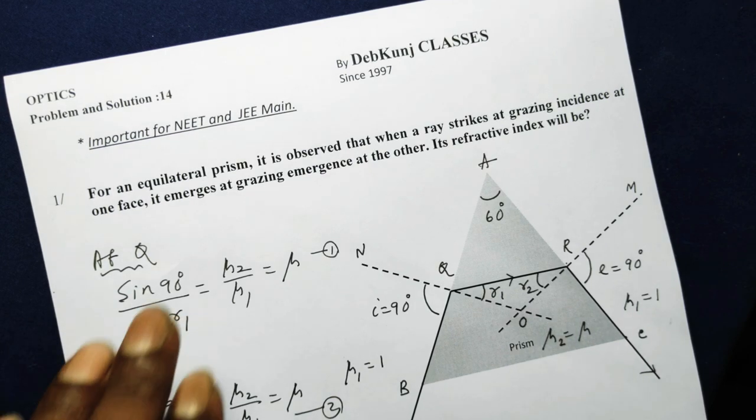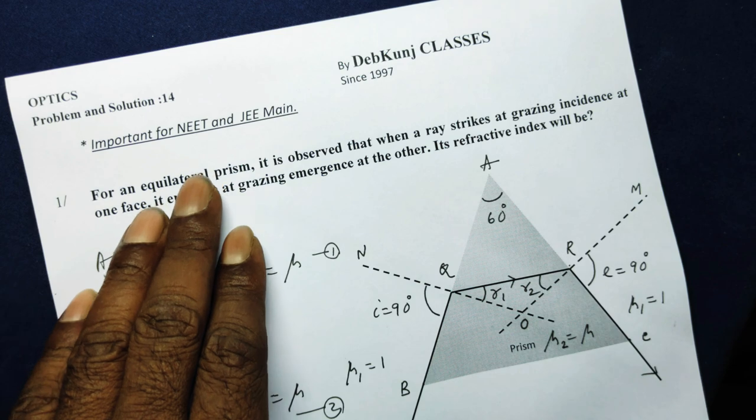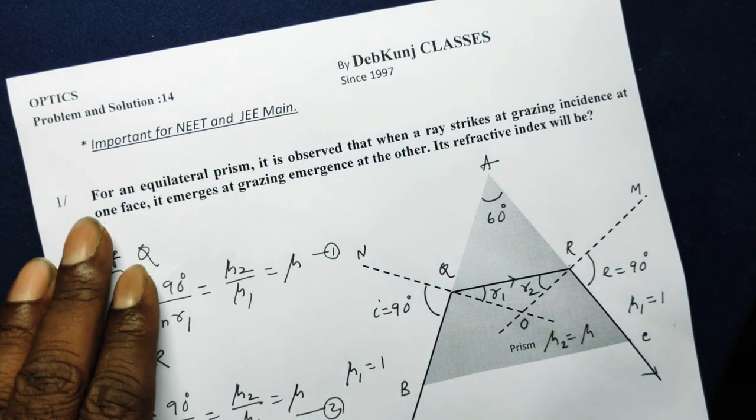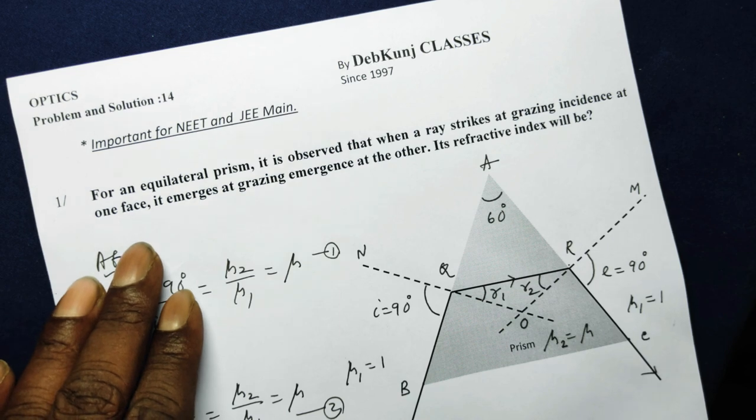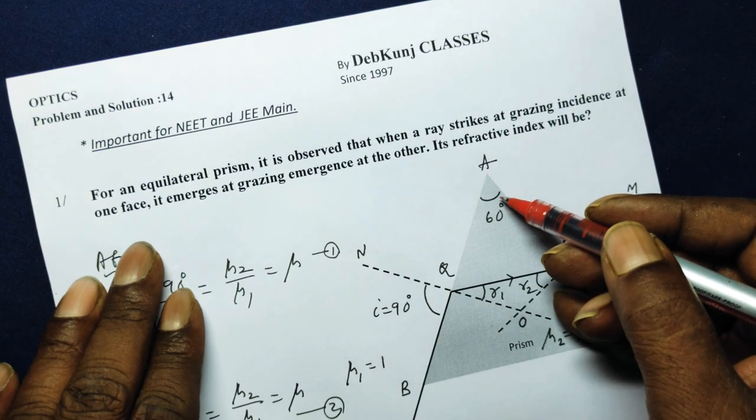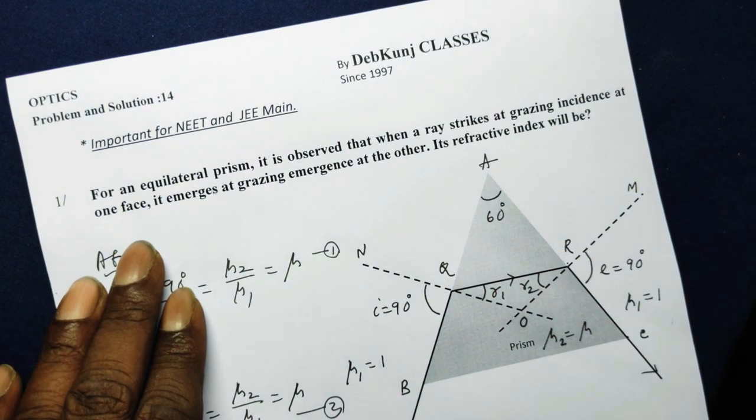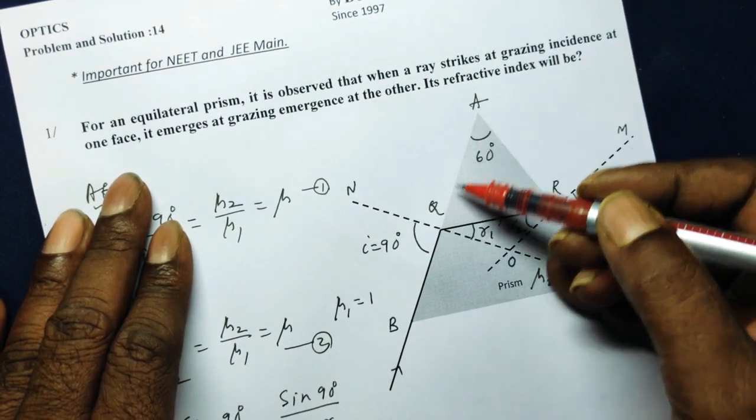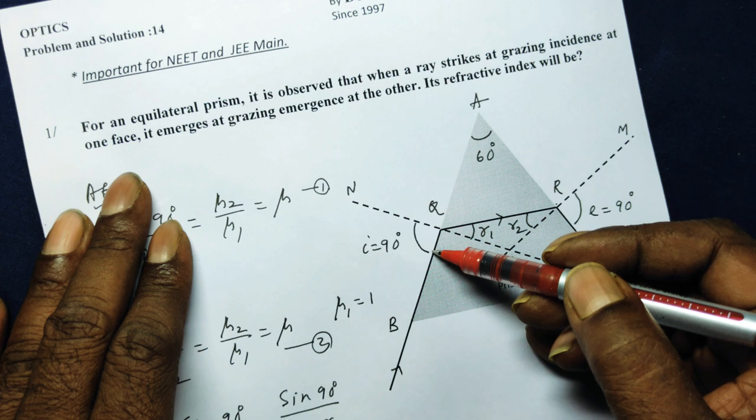Now let us discuss one more problem from refraction of light through a glass prism, where the angle of the prism is given as A is equal to 60 degrees.